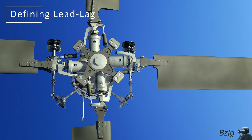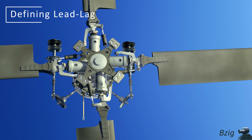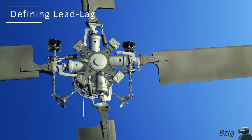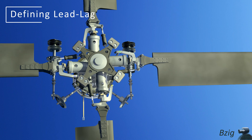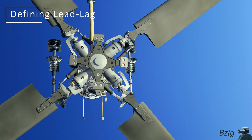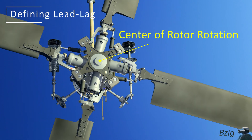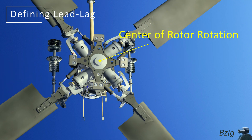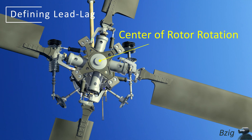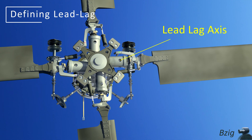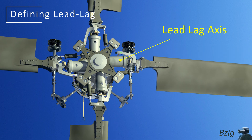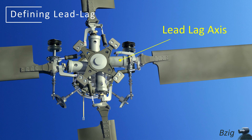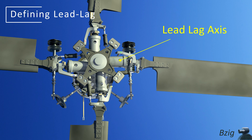Lead lag is motion about an offset hinge that's in the rotor's plane of rotation. On casual observation, it may be easy to mistake lead lag for rotor rotation. Rotation applies to all of the blades turning about the hub's center of rotation, whereas lead lag is the motion of individual blades where they momentarily speed up or lead the rotation, and slow down or lag the rotation.